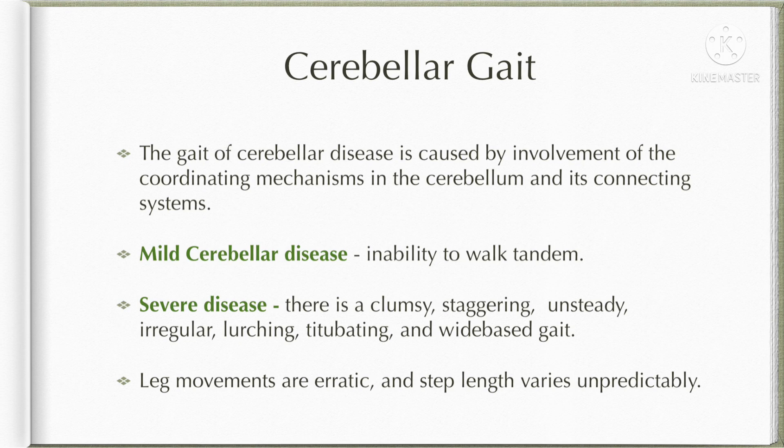The gait abnormalities of Cerebellar Diseases are caused by the involvement of the coordinating mechanisms in the cerebellum and their connection with the higher centers. In mild Cerebellar Diseases, there is an inability to perform tandem walk, while in severe diseases the gait is usually clumsy, staggering, unsteady, irregular, lurching, or a wide-based gait. The leg movements are usually erratic and step length varies unpredictably.